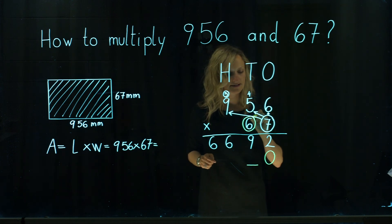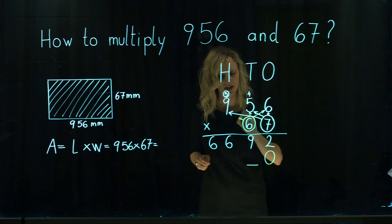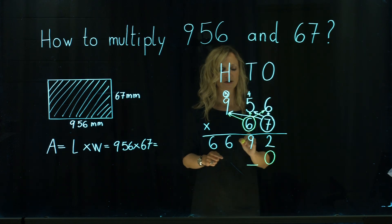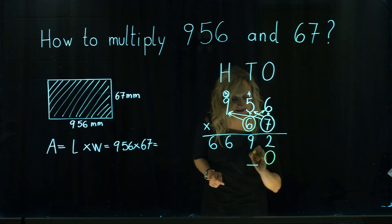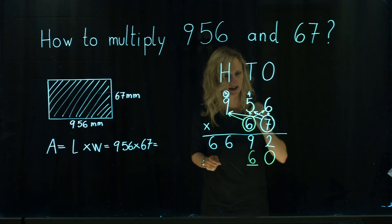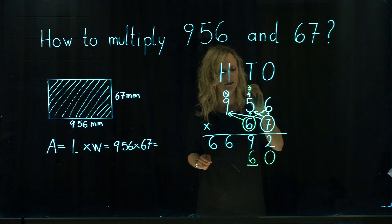Then we go 6 times each digit in the first number. 6 times 6 is 36. 6 goes under. 3 carry over.